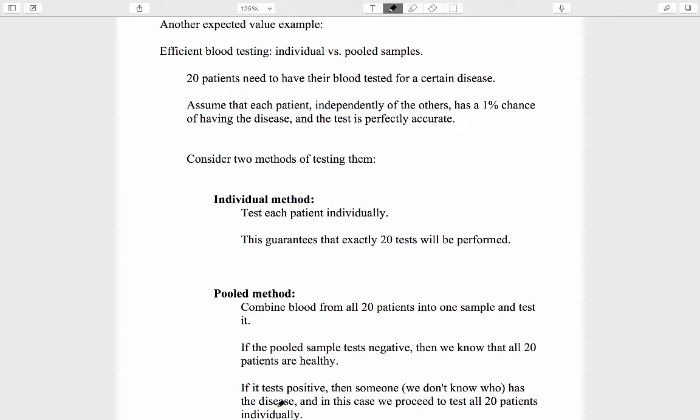But what we do know after the pooled sample tests positive is that we're going to have to do more testing to find out who actually has the disease and who doesn't, and so in that case we proceed to test all 20 patients individually.